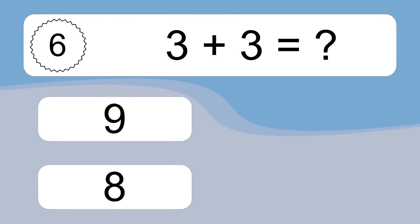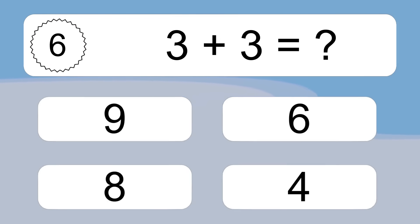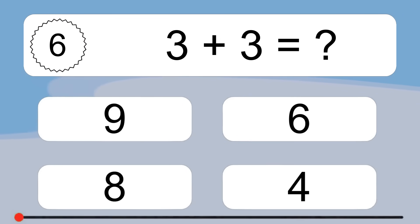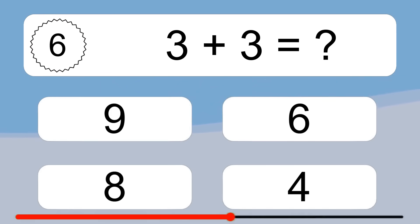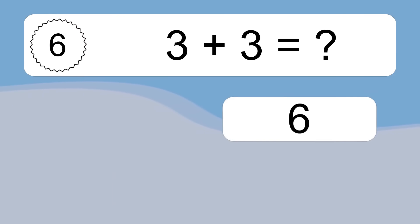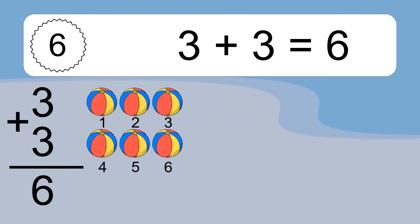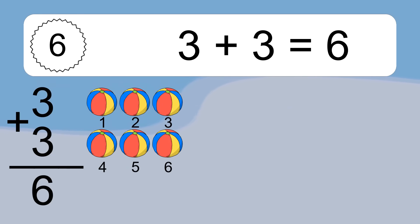3 plus 3 equals what? 3 plus 3 equals 6. Let's count it. 1, 2, 3, 4, 5, 6.